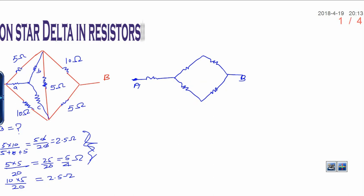This is terminal A and this is terminal B. Now when you convert delta into star, no need to represent these three because they are converted in star. Now this will be A, A is 2.5 ohms. This is C, C is also 2.5 ohms. And this is B, B is 5 by 4 ohms. Already given that is 10 ohms, now this is 5 ohms.